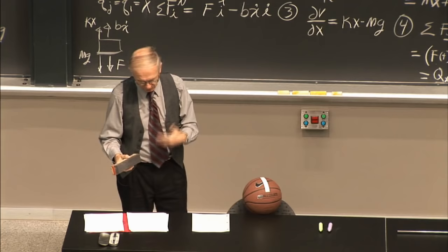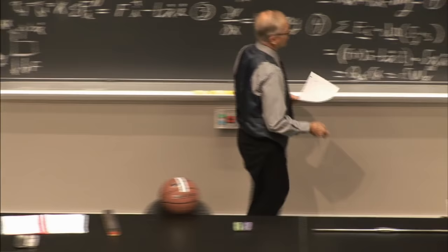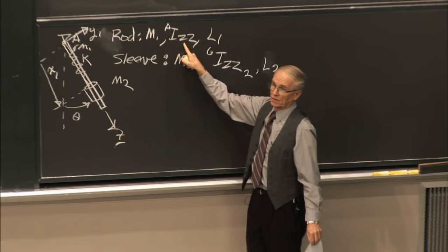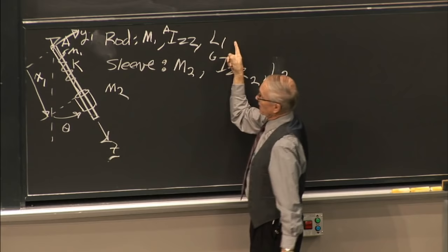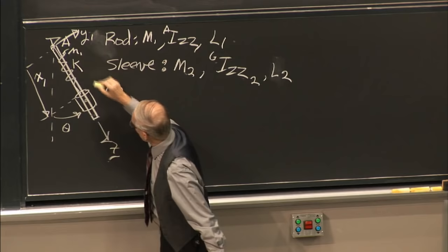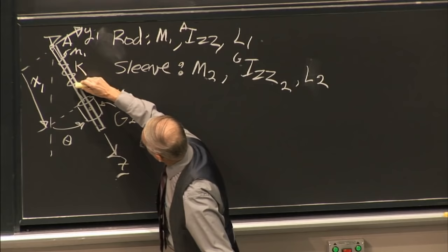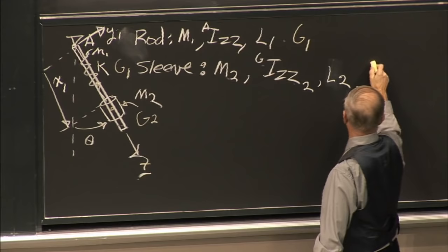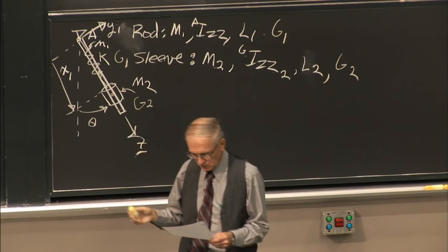The system parameters: the rod has mass M1, mass moment of inertia Izz about point A, and length L1. The sleeve has mass M2, mass moment of inertia Izz about its center of mass G2. There's a center of mass G1 for the rod and G2 for the sleeve. The unstretched spring length is L0.